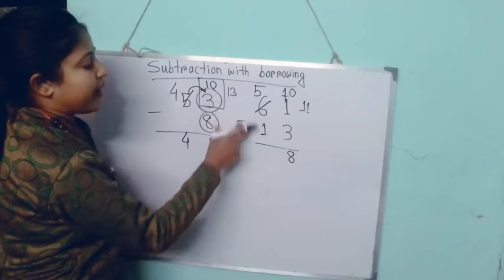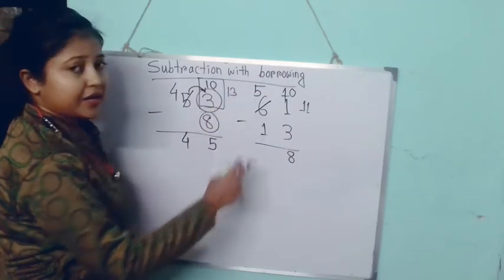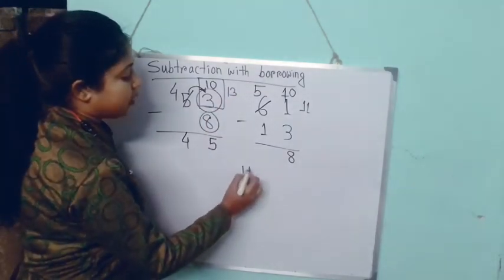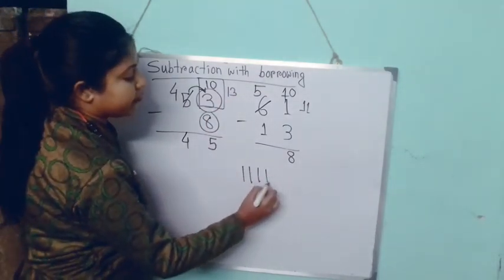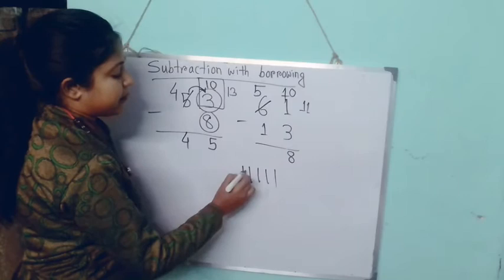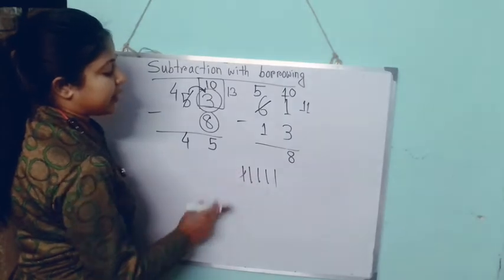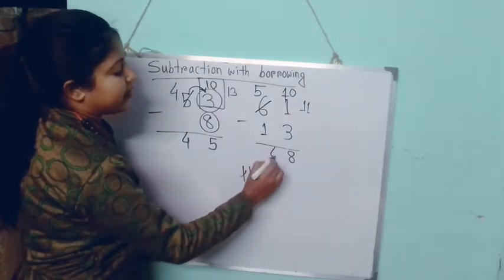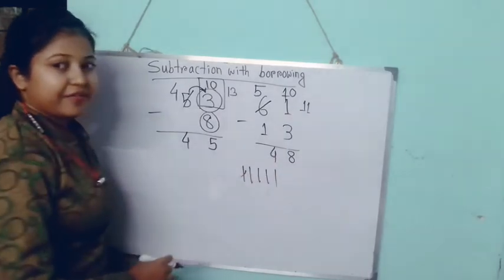Now 5 minus 1. We draw 5 lines: 1, 2, 3, 4, 5. Minus 1 — that means 1, 2, 3, 4. It will be 4. So the answer for 61 subtract 13 is 48.